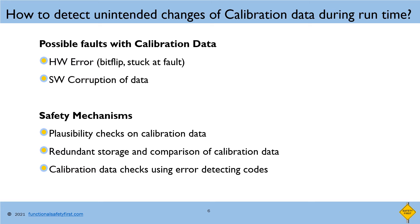The calibration data stored in NVM can be susceptible to two kinds of problems. Number one, a memory hardware error such as a bit flip or a stuck-at fault leads to wrong calibration data, which in turn leads to a violation of the safety goal. Number two, a non-ASIL or a lower ASIL software makes an unintended write to calibration data, thus changing its value.